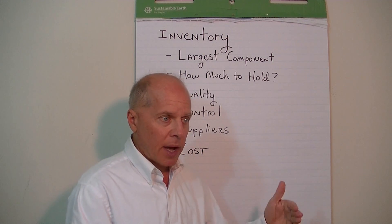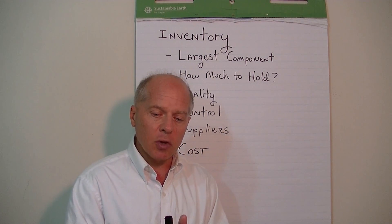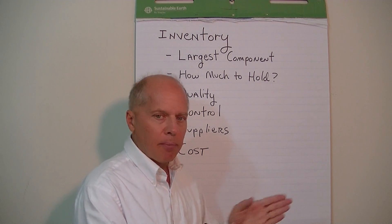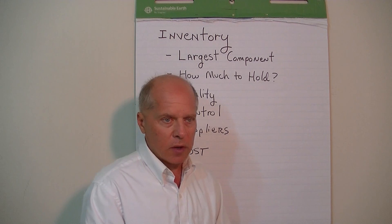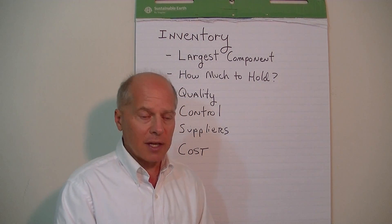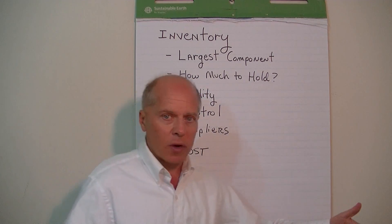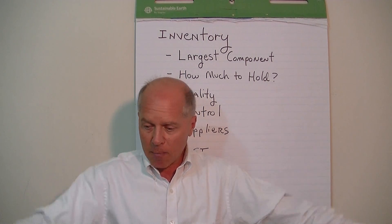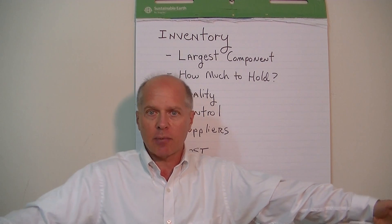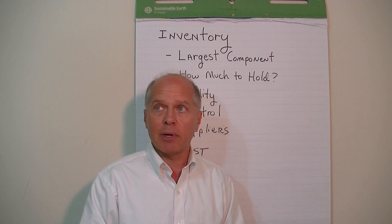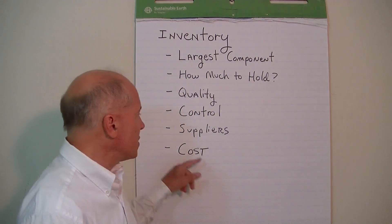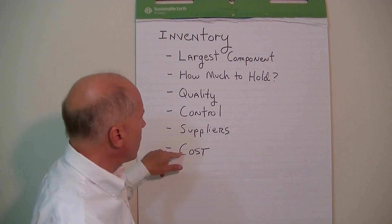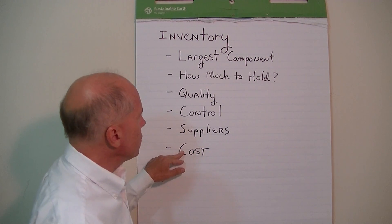From an accounting and financial point of view, we want to control the cost of inventory. When you go out and buy inventory from a supplier or vendor, keep in mind there are additional costs beyond simply procuring it and writing a check. For example, you may have to insure the inventory, pay people to place the order, and store the inventory — with handling costs, storage costs, floor space, rent on the facility, and air conditioning so the inventory doesn't spoil.